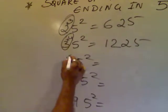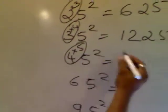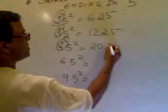After 4 comes 5. 4 times 5 is 20. 5 square is 25.